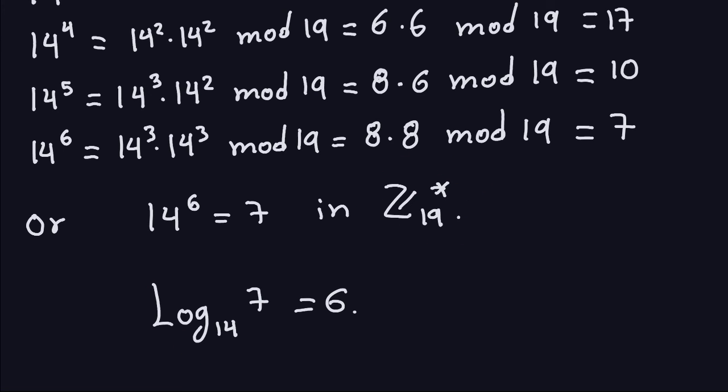This naive exhaustive search is not a good way to compute the discrete log. If you were to do this with a large prime, it would not be feasible, since you'd have to compute powers of alpha until you reach beta. So that's the definition of the discrete logarithm and the discrete logarithm problem, which are important for cryptography. In the next video, I'll show you a slightly better algorithm to compute discrete logs — it doesn't solve the hardness problem, but it makes it a little bit easier. I'll see you in the next video.